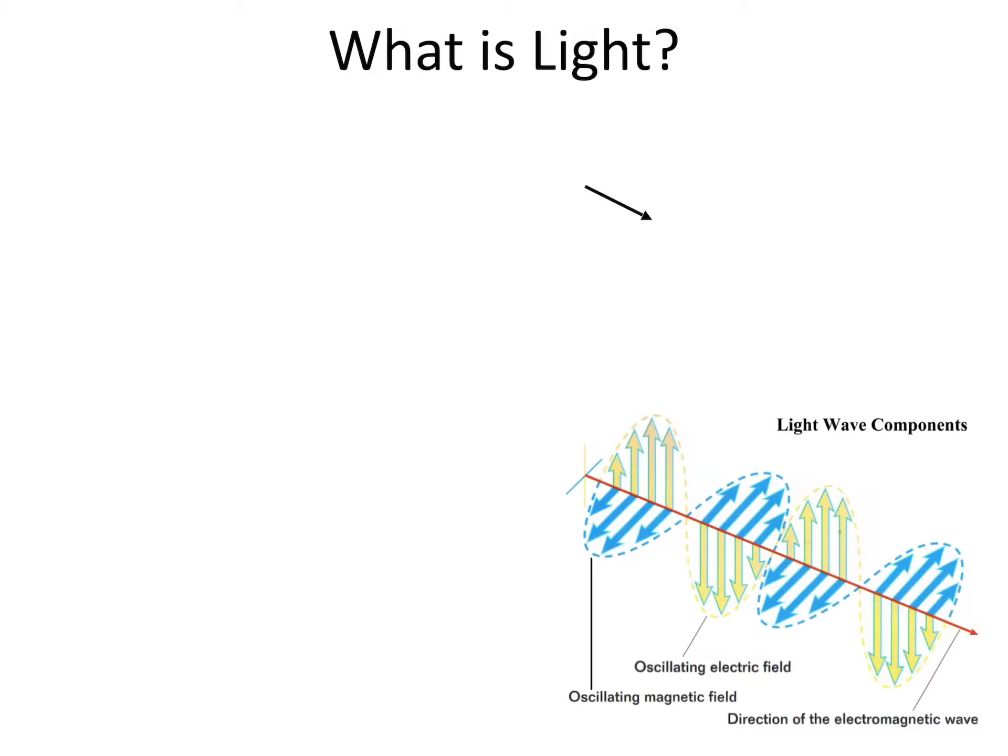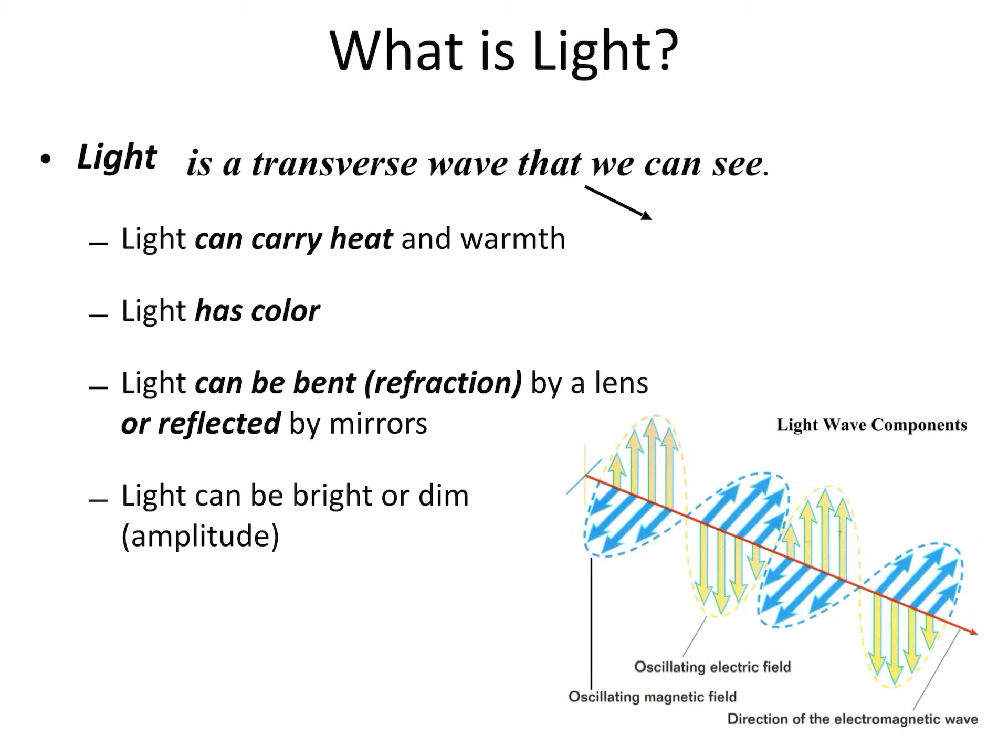All right, guys, so for this video I just wanted to highlight some information about visible light. Visible light, if you recall, is in the middle of the electromagnetic spectrum and it's going to include our different colors. Remember that we had our different shapes for our types of waves, and so light is going to specifically be a transverse wave.